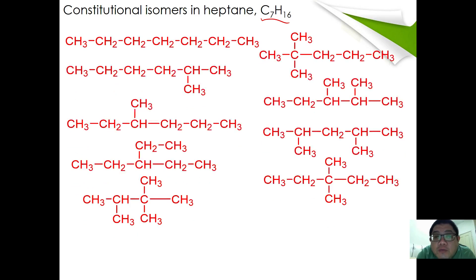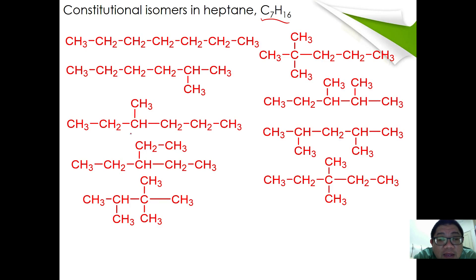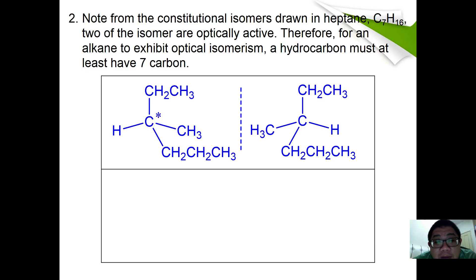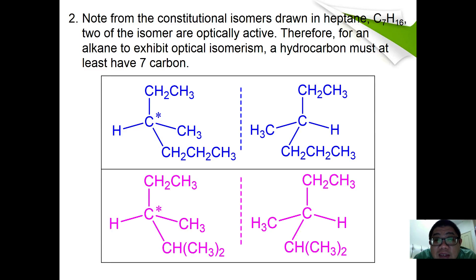Here it shows all the structural isomers of C7H16. Look carefully at all nine structural isomers and identify which of these molecules has a chiral carbon atom. There are two, so try to identify them. As you can expect, it is 3-methylhexane and 2,3-dimethylpentane. If I were to express the object-image pair of enantiomers, these are the expected seven-carbon structures that have optically active isomers from 3-methylhexane and 2,3-dimethylpentane.